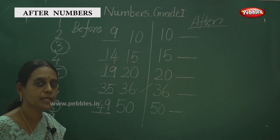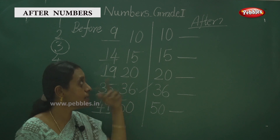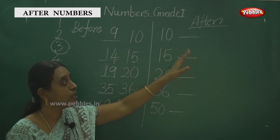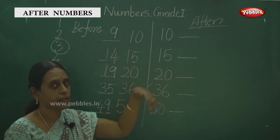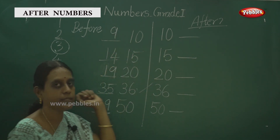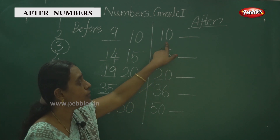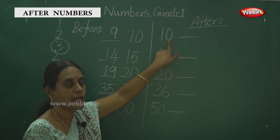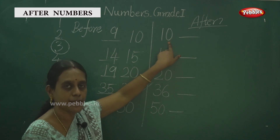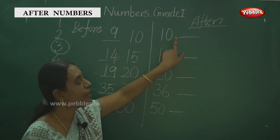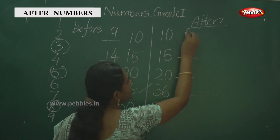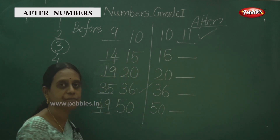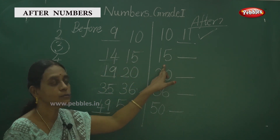So you have to say the number: 1, 2, 3, 4, 5, 6, 7, 8, 9, 10, 11. So you have to write here 11. This is correct.